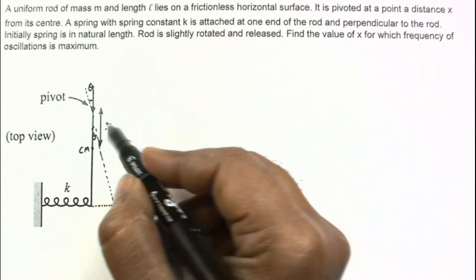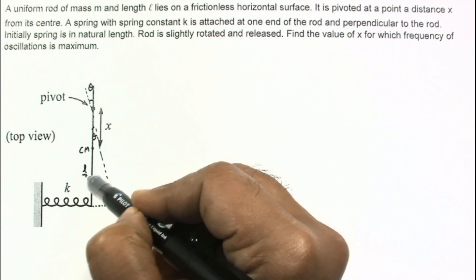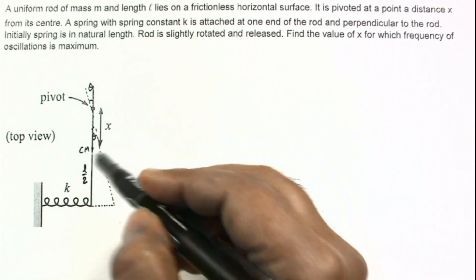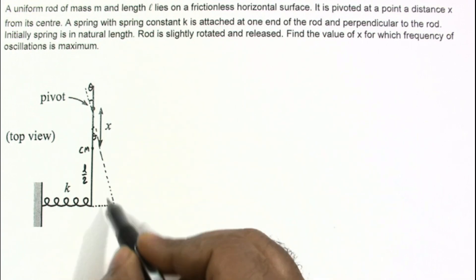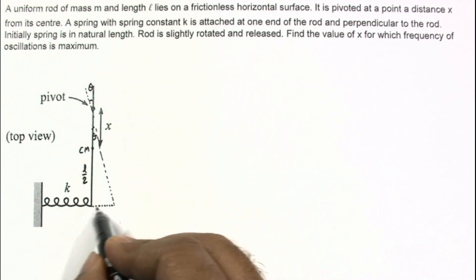This length is x and this length is L by 2. So total length from here is L by 2 plus x. This is like radius and this distance will be radius multiplied by theta. Theta is very small, so extension produced will be L by 2 plus x multiplied by theta.